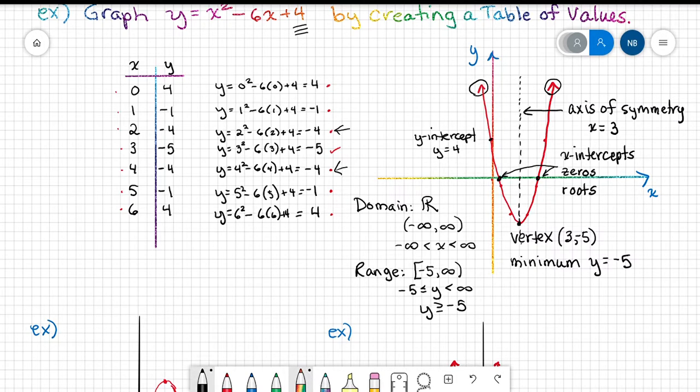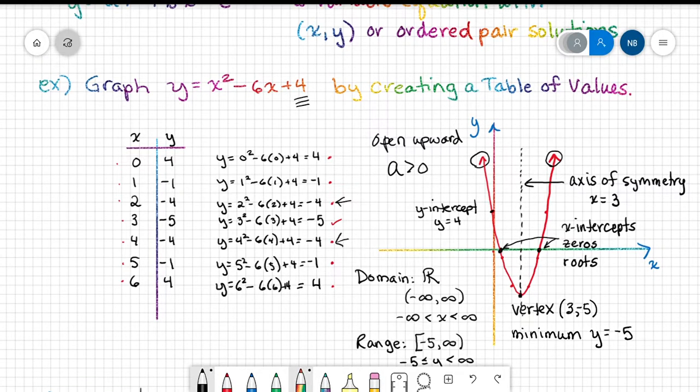There's one last fact about this graph. It opens upward. So let's write that up here. The branches open upward. As this thing goes higher and higher, the branches get further and further apart. Open upward. That's because a, the leading coefficient, is greater than 0. To remind you, a is the number in front of x squared, which in this case is positive invisible 1.